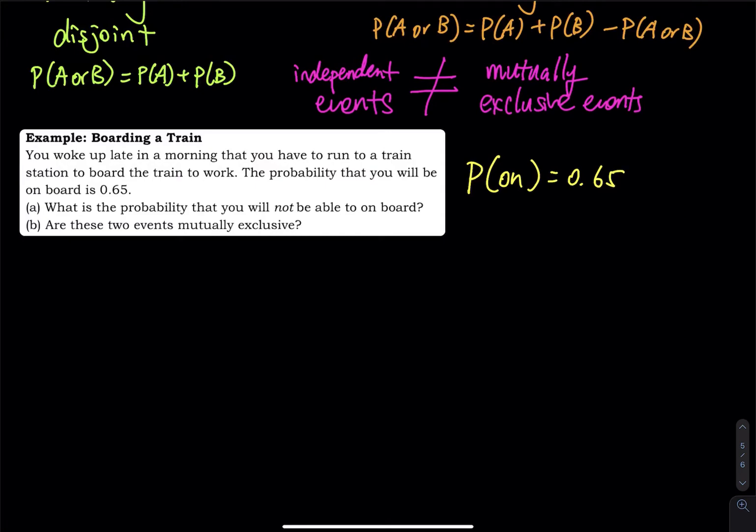Now, what is the probability that you will not be able to be on board either? So in a train or bus, either you are in the train or you are outside the train. So in the train is 0.65. What about outside the train, not on board? So that would be 1 minus 0.65. That equals to 0.35. Either you are inside or you are outside.